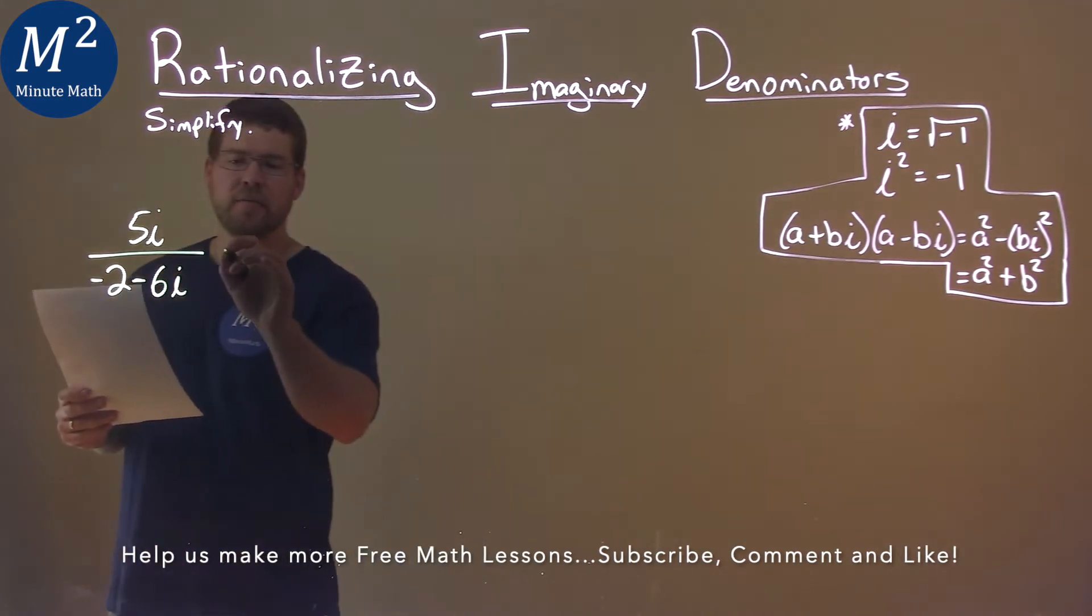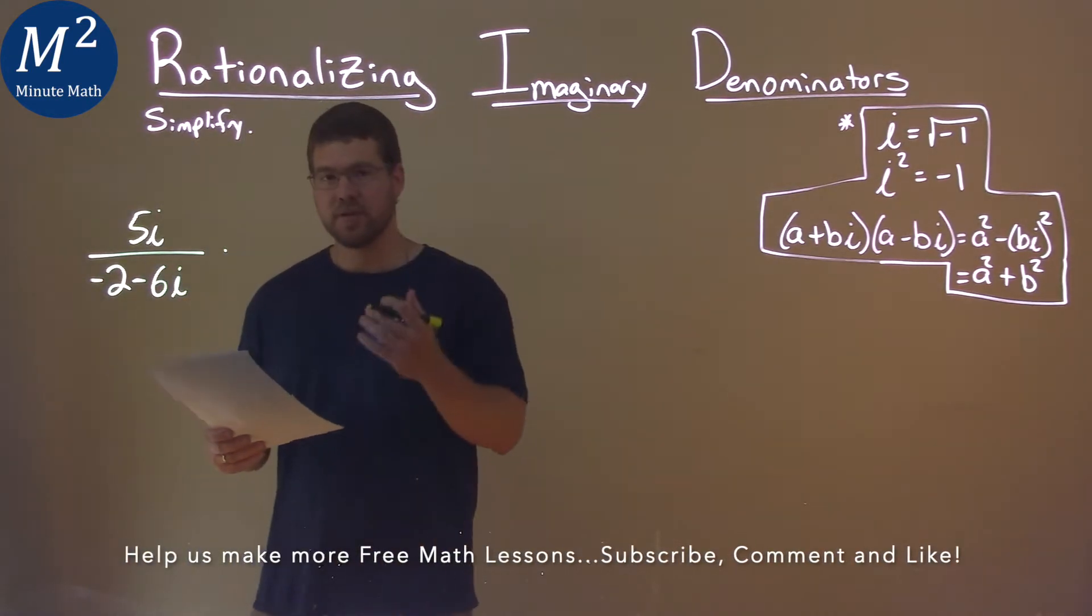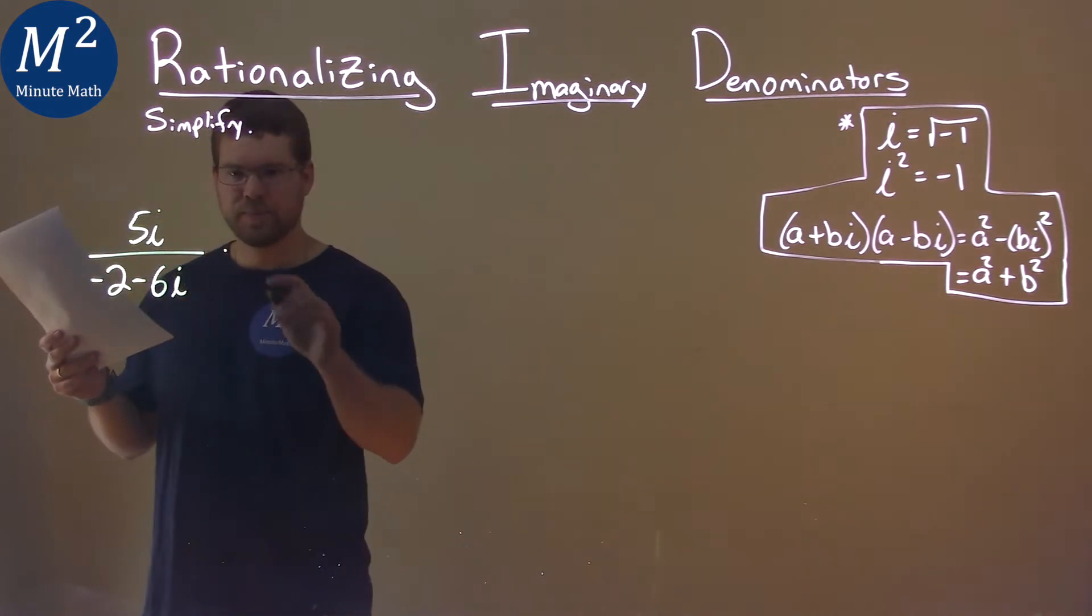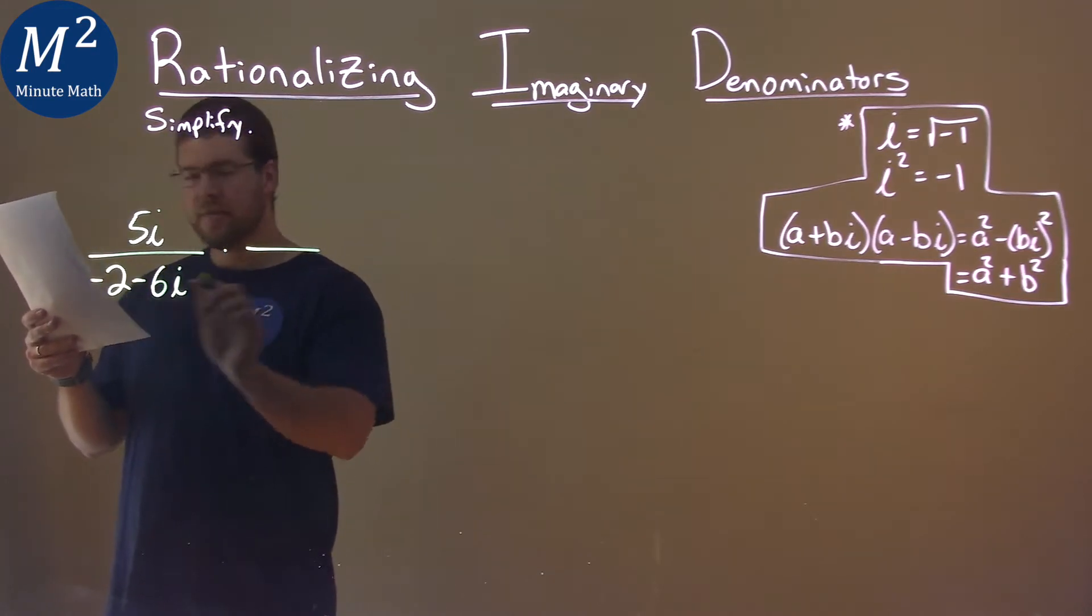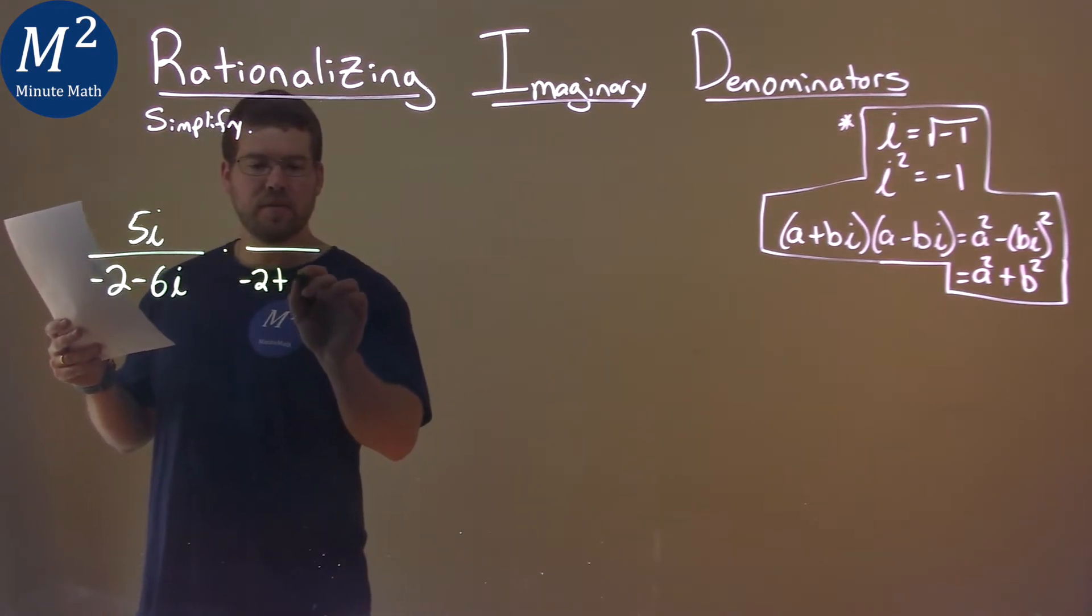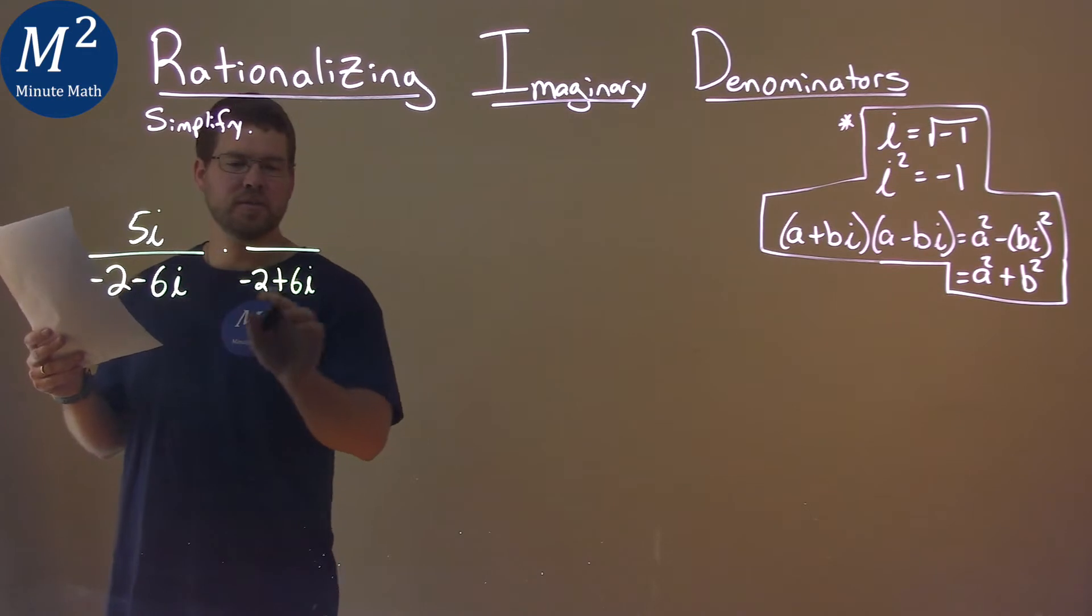What I'm going to do is identify the denominator's conjugate, or complex conjugate, if you will. And that is negative 2 plus 6i. So it's the same thing, just put a plus sign there.